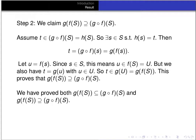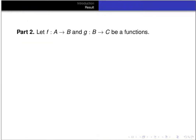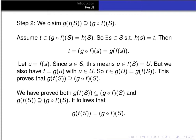This proves that the image of S under g composed with f is a subset of g of f of S. Since we proved set inclusion goes both ways, it follows that these two sets are equal: g of f of S equals the image of S under g composed with f.